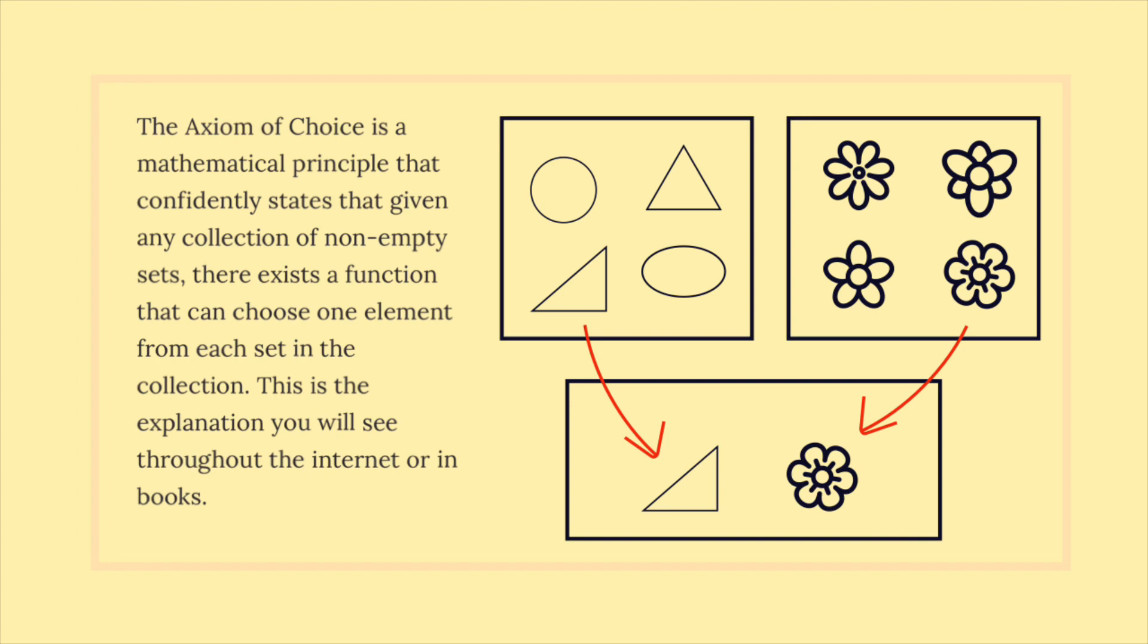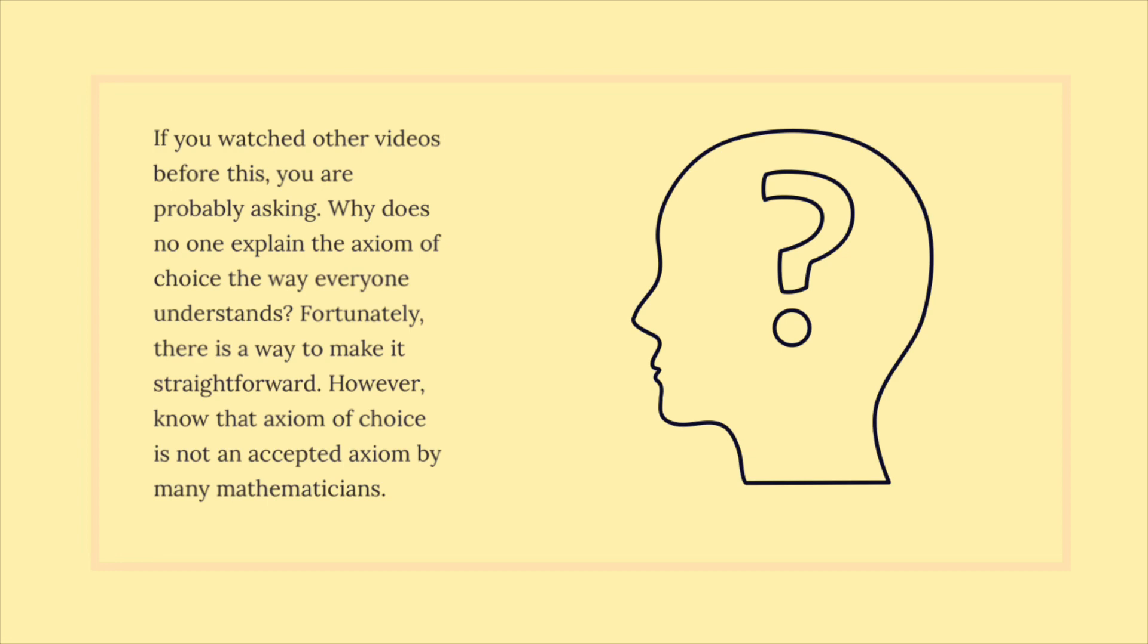The axiom of choice is a mathematical principle that confidently states that given any collection of non-empty sets, there exists a function that can choose one element from each set in the collection. This is the explanation you will see throughout the internet or in books.